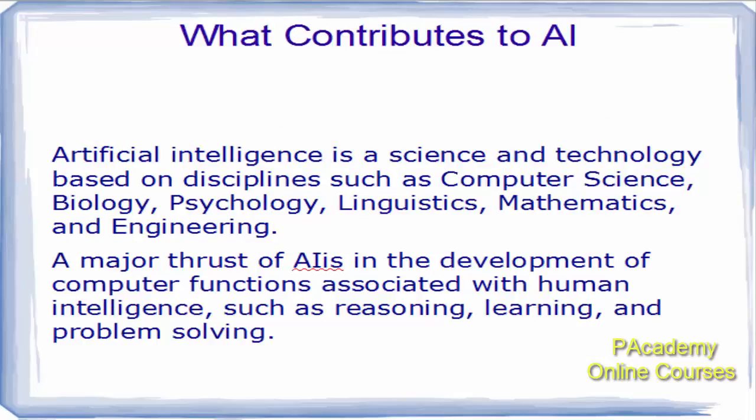What contributes to AI? Artificial intelligence is a science and technology based on disciplines such as computer science, biology, psychology, linguistics, mathematics, and engineering. If you think artificial intelligence is only computer science, you're wrong — it's all those things that come together to build something that's like humans. A major thrust of AI is the development of computer functions associated with human intelligence such as reasoning, ability to learn, and ability to solve given problems.